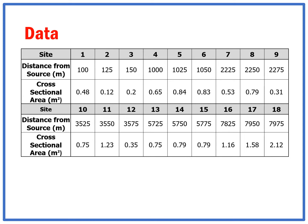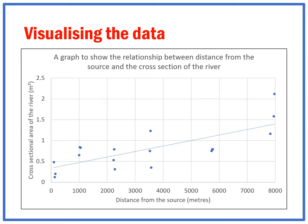Before I show you how to do this in Excel, I want to show you what this data would look like on a graph, which will help show you why we need a statistical test. This is the data that I collected and how it's been plotted. It implies there is a positive relationship — as the distance from the source increases, the cross-sectional area has also increased. But a statistical test tells me the strength of that relationship, between one and minus one, and whether it reflects reality or happened by chance. You cannot measure every millimetre of a river, so you choose sites, and you want to find out whether the data you've collected reflects reality.